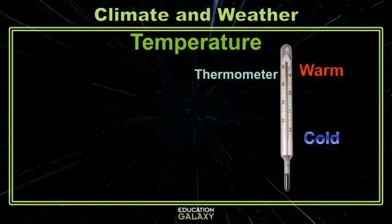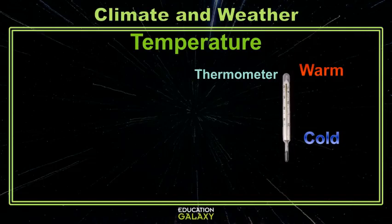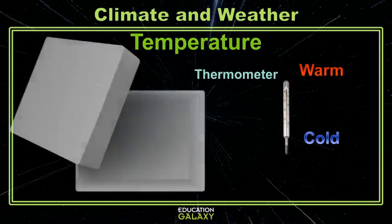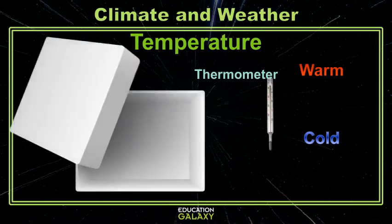To describe weather, you could use a thermometer to take the temperature. This tells you how warm or cold it is, but to get the most accurate results, it's best to keep your thermometer housed in a white box out of the sun.